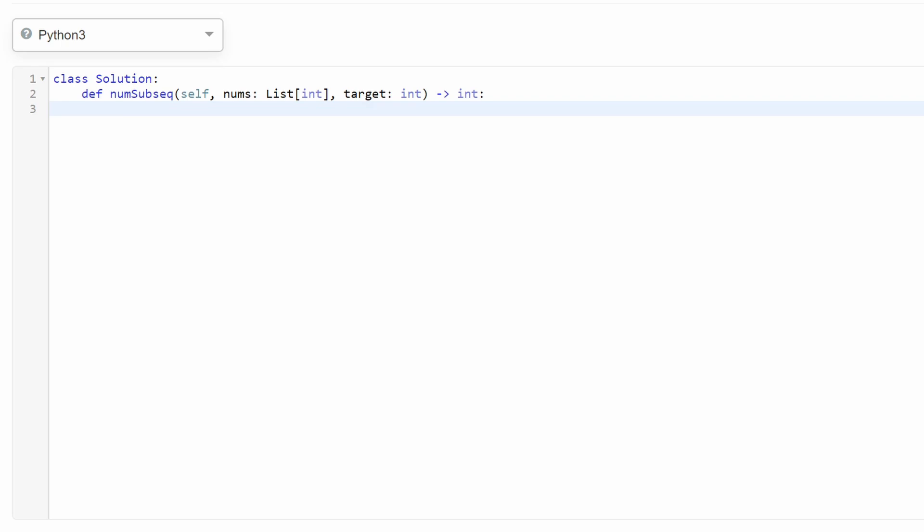So now let's write the code in the contest format, of course, because this problem hasn't been released yet. So the first thing we're going to do is sort the input array. And we have to return our solution, which I'm going to call result, initialize it as 0. And we have to return it. It could be really big, so we have to mod it by a value. So I'm going to have this copy and paste the value here.